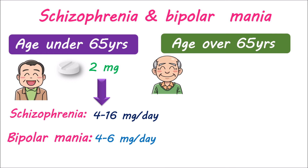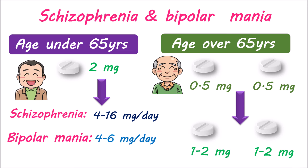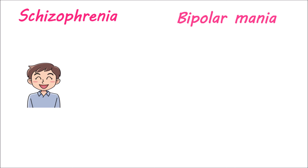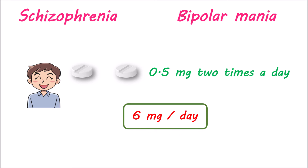In elders over 65 years old, risperidone is started initially at 0.5 mg given twice daily. The dose can be slowly increased to a target dose of 1–2 mg given twice a day, both for schizophrenia and bipolar mania. Similarly, in children, risperidone can be started at 0.5 mg given twice a day for the treatment of either schizophrenia or bipolar mania, with the dose increased to a target dose of 6 mg per day.